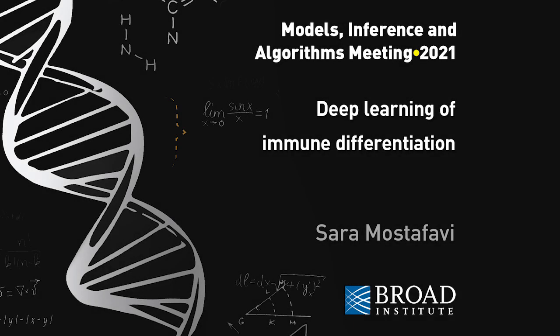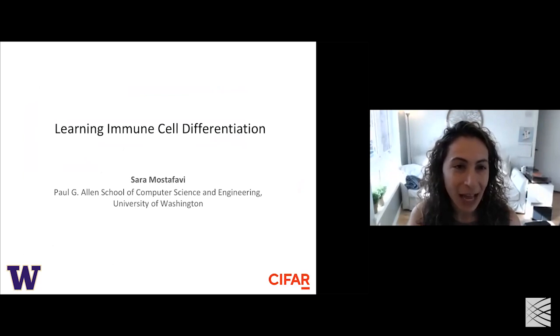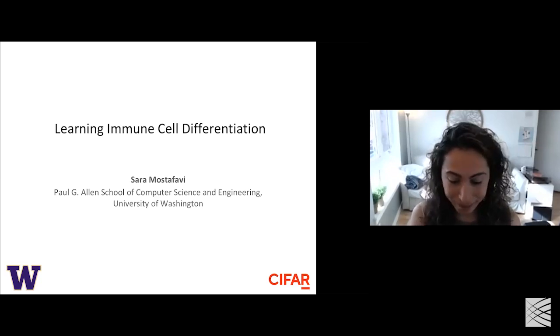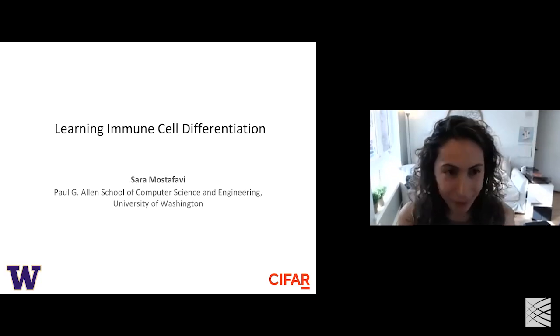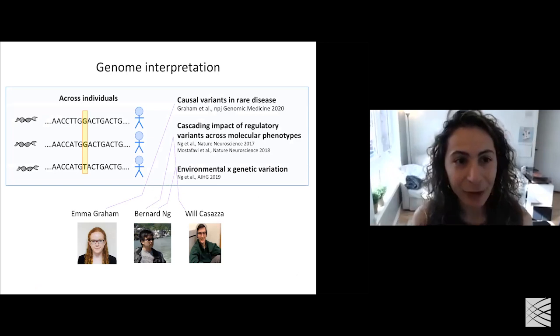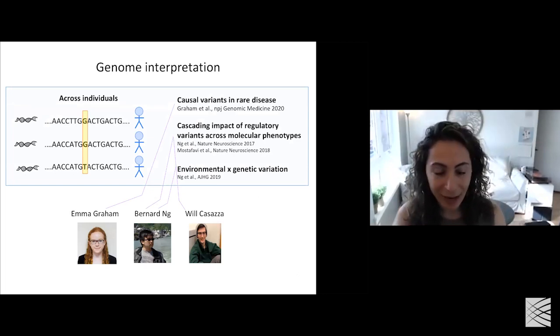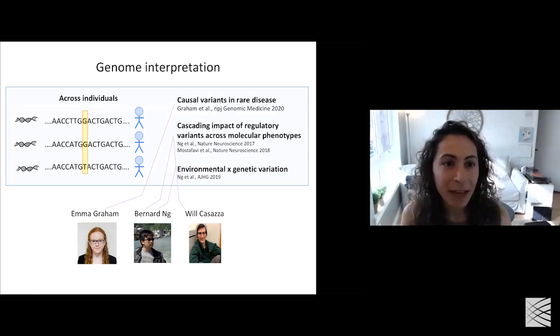I'm going to tell you about some of our recent work on interpreting deep neural networks to extract mechanistic insights — in this particular case, about how immune cell differentiation, or the rules of immune cell differentiation, is encoded in the genome. Before that, I wanted to give a higher-level introduction to the research that we do. In the last five years, since I've started my own lab, we've been really interested in questions that relate to genome interpretation.